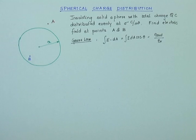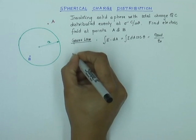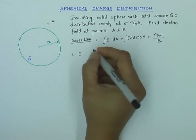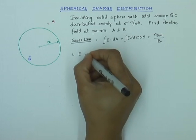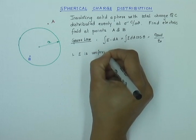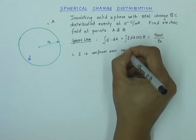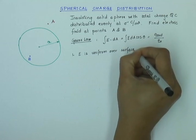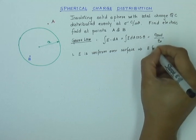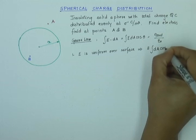However, if I pick a Gaussian surface such that E can be argued as uniform over the Gaussian surface — so E is uniform over the surface I choose — then E will come out of my integral and the integral just remains dA cos θ.